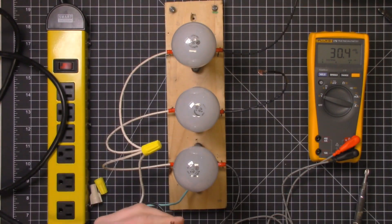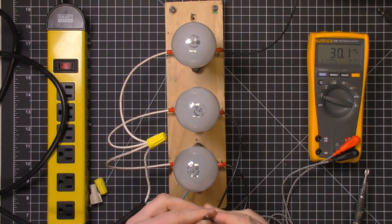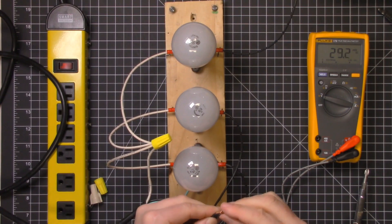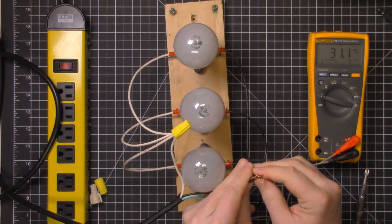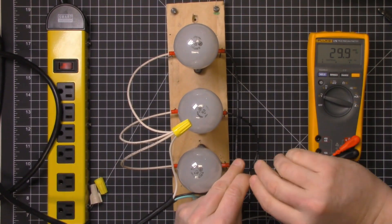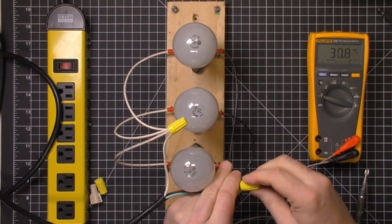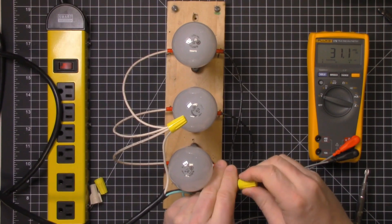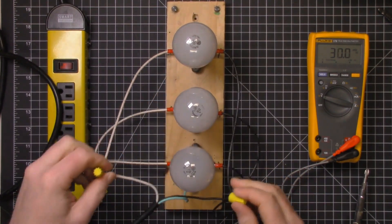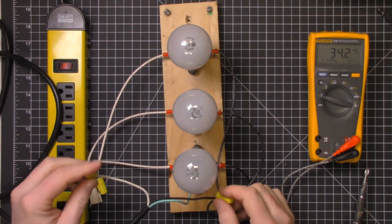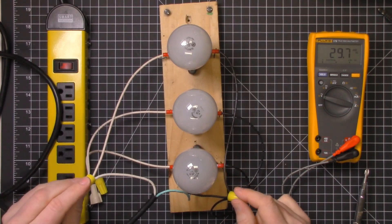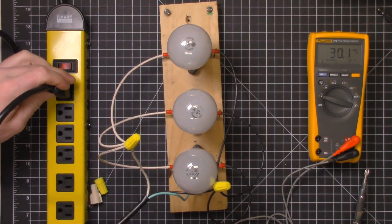So instead of going from one to the next to the next in a kind of a chain style, this is connected all up in parallel, where each load is connected directly to the 120 volts. So the voltages should be the same across each of these loads at this point. So we'll give that a go here.